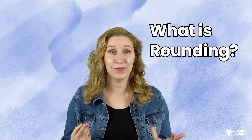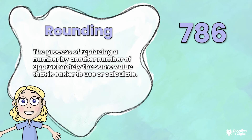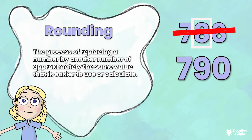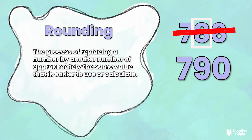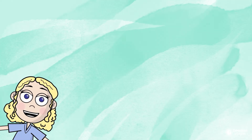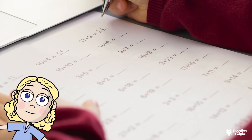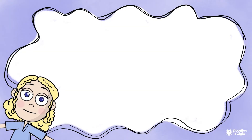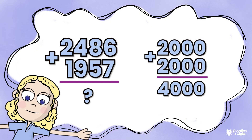So what is rounding? Rounding is the process of replacing a number by another number of approximately the same value that is easier to use or calculate. When in real life do we actually need to round numbers? I like to use rounding when I'm calculating numbers — I like to round numbers and estimate the approximate answer so I can see if my actual answer is on the right track or not.